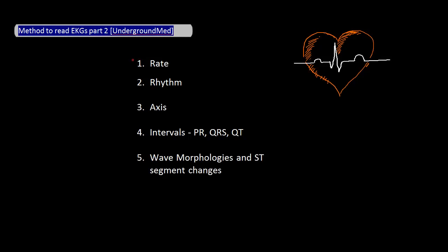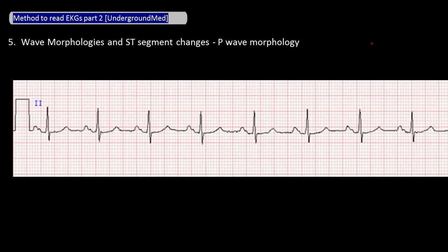In the last video, we talked about rate, rhythm, axis, and intervals. The last thing I do is check the morphologies of each of the waves and check for ST changes. Let's begin by looking at the morphologies of the P waves. Look to see if the P wave morphology within a lead and PR intervals in general are consistent. When looking at P wave morphology, also look at the PR intervals to see if they are depressed. Depressed PR intervals in all or nearly all leads is a sign of pericarditis. You can see here that the PR intervals are not depressed, but are at the same baseline as the rest of the EKG.